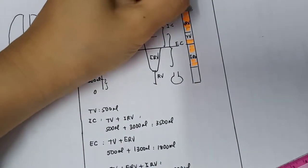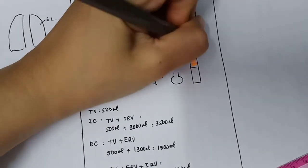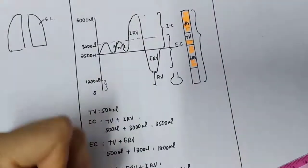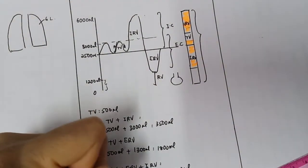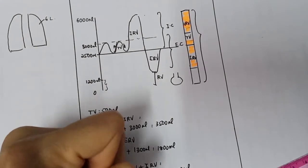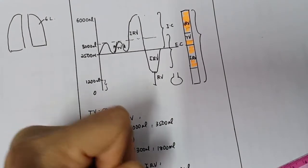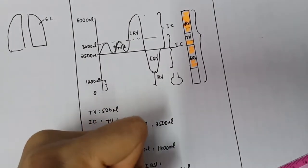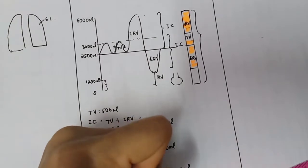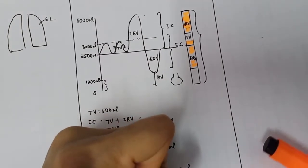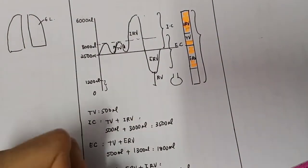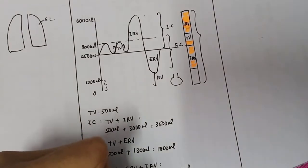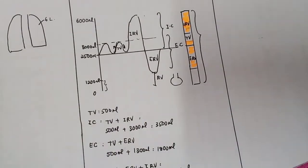What is the total lung capacity? That is the whole thing — the tidal volume, plus the expiratory residual volume, plus the residual volume, plus the inspiratory residual volume. This equals 6,000 ml.